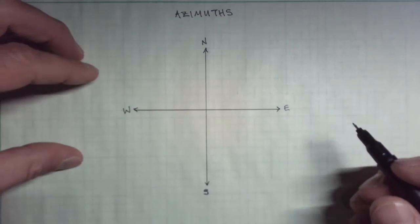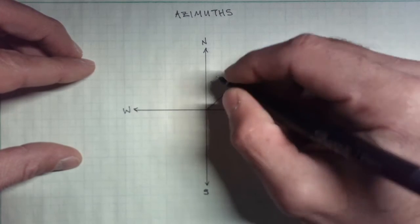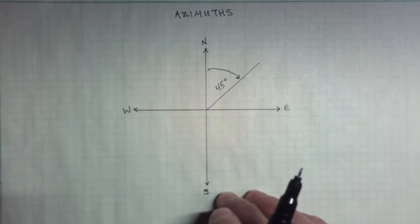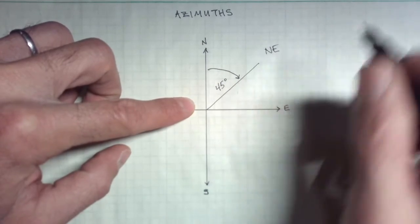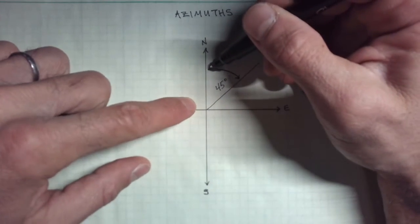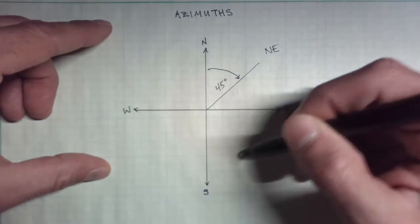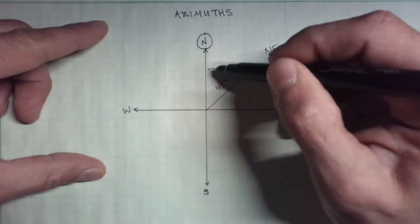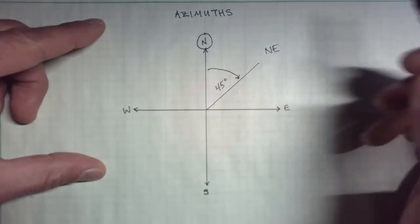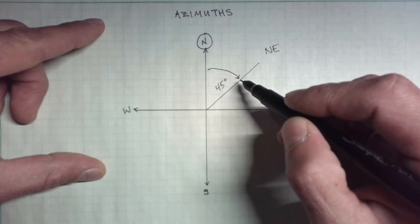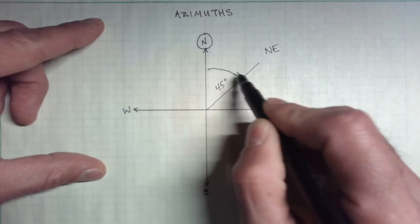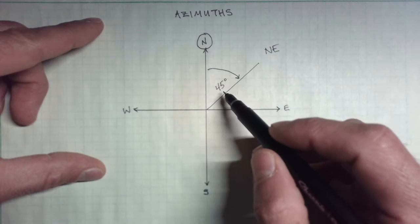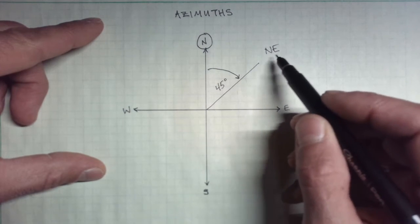Azimuths are a little different. We had that line at 45 degrees from the north — that was the first bearing line we looked at. Azimuths in the northeast quadrant are going to be the same as the bearing. Azimuths are always read clockwise from the north all the way around the circle until we hit our line. So the azimuth is just 45 degrees for this line — we don't have to say north and east.